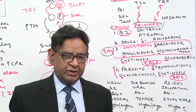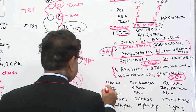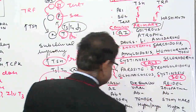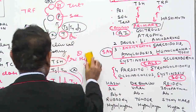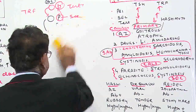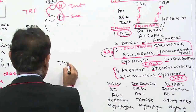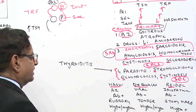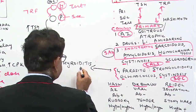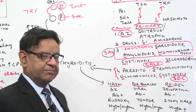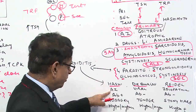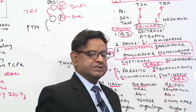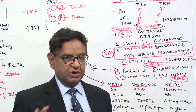Other conditions which can lead to thyroiditis are Hashimoto's (autoimmune), De Quervain's (viral), and Riedel's thyroiditis. These are the three main causes of thyroiditis. Even these parasites lead to thyroiditis. Hashimoto's is autoimmune in etiology, De Quervain's is viral due to viral fever, and Riedel's thyroiditis is idiopathic fibrosis of the thyroid gland.